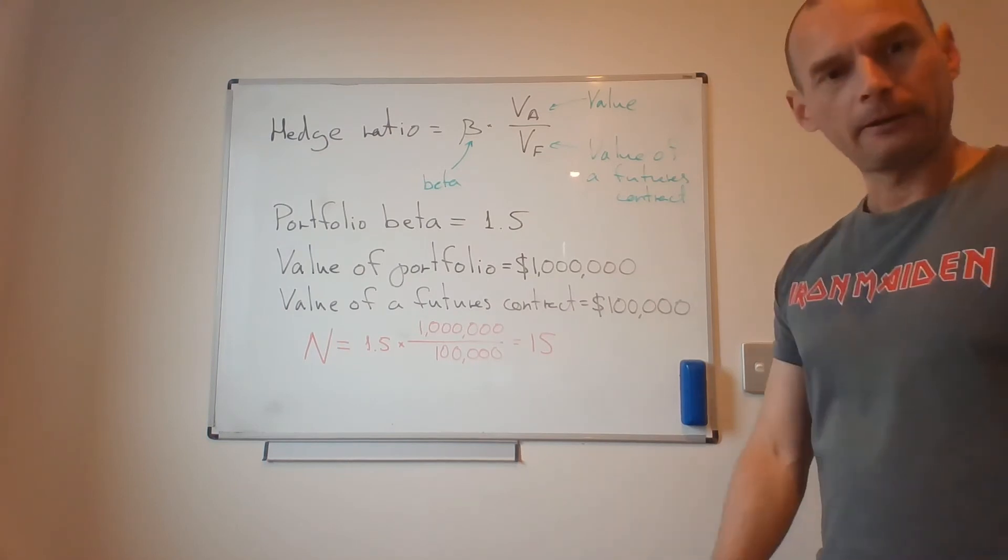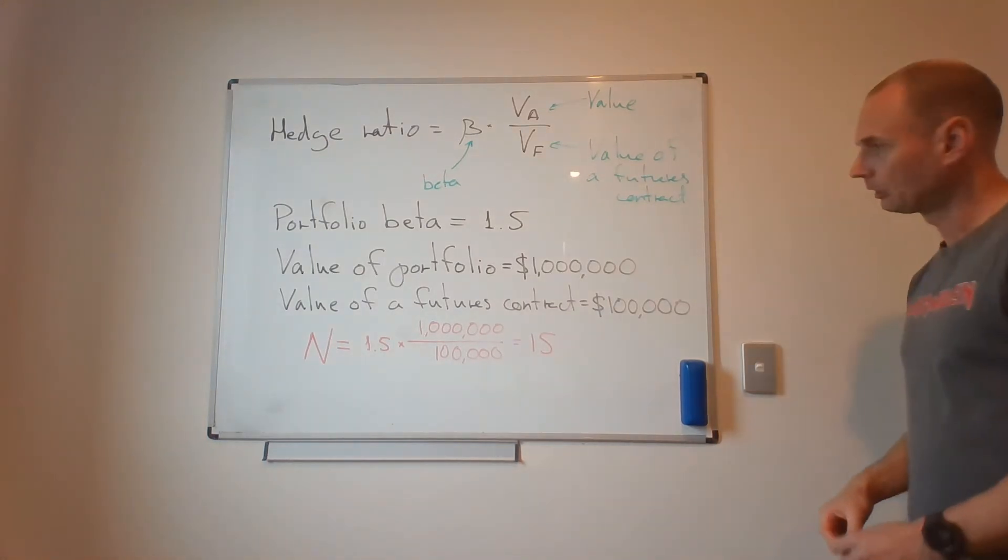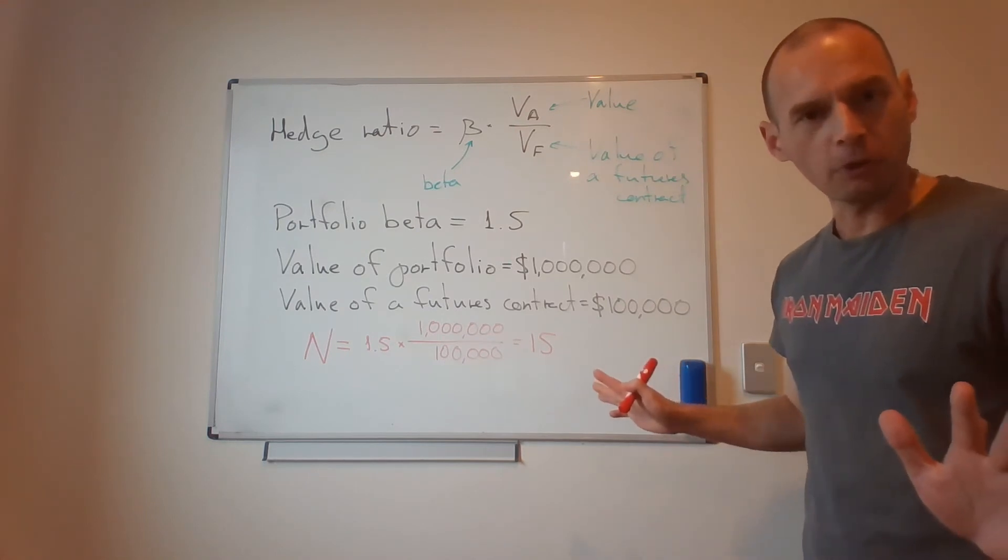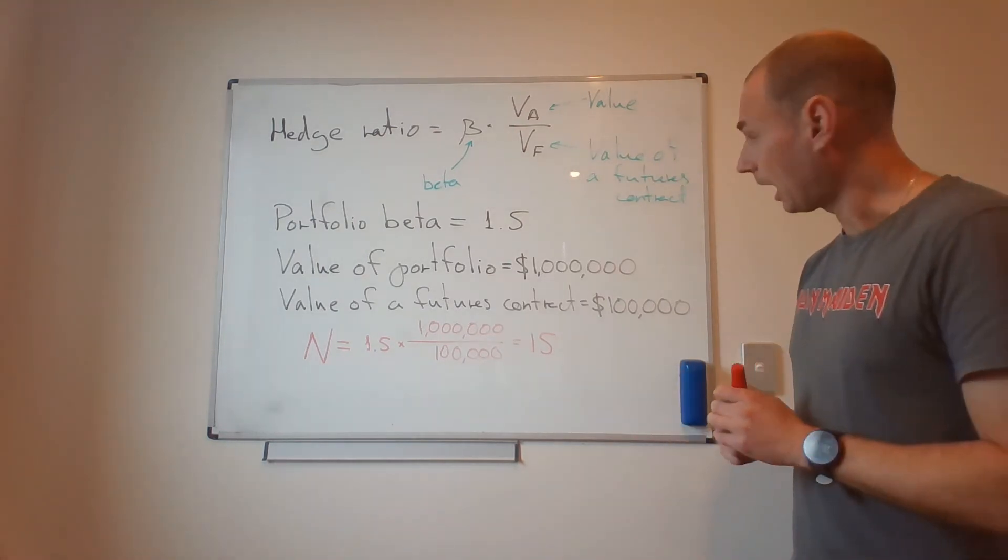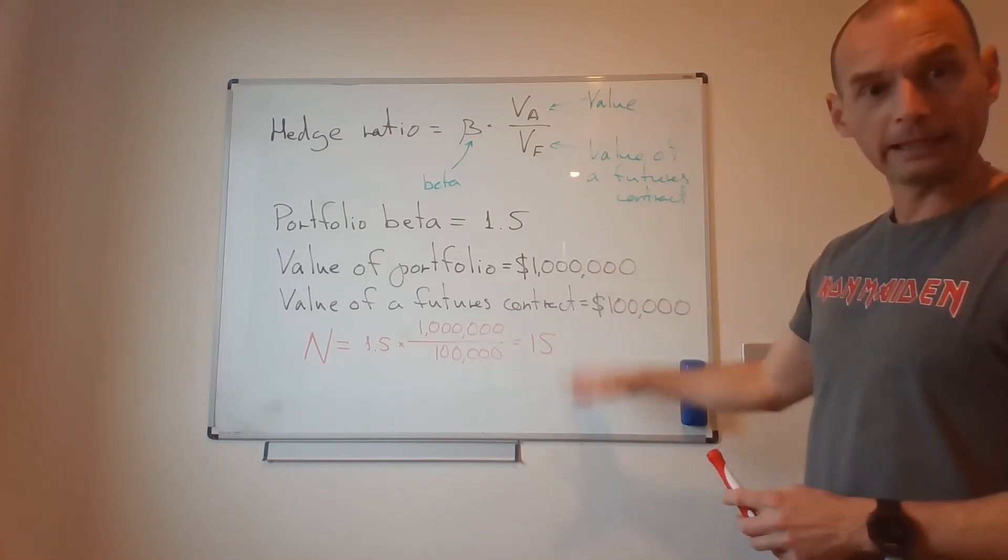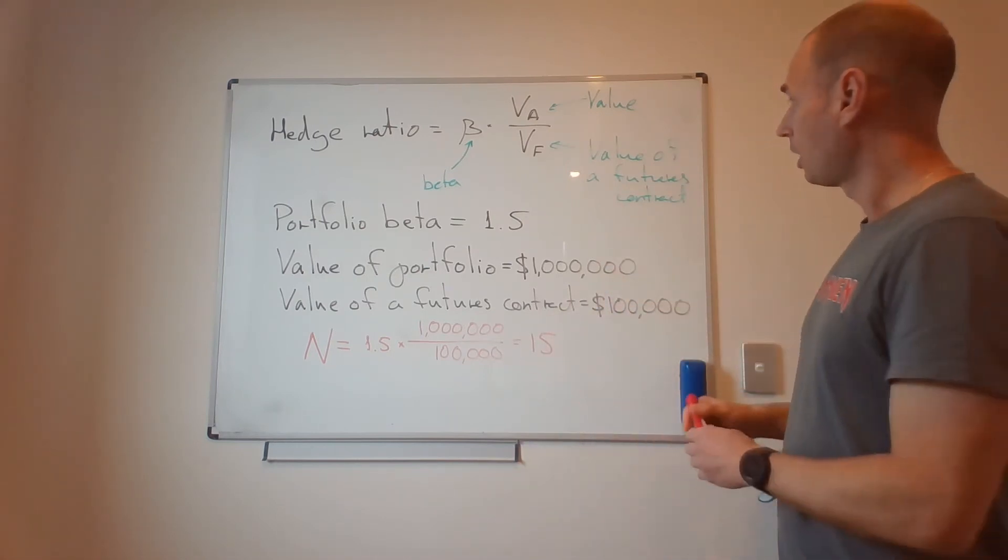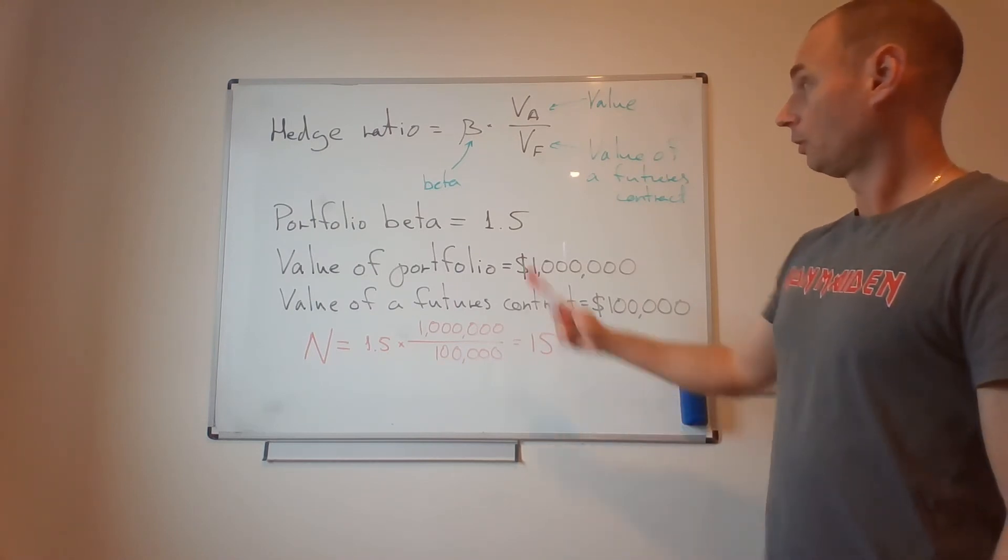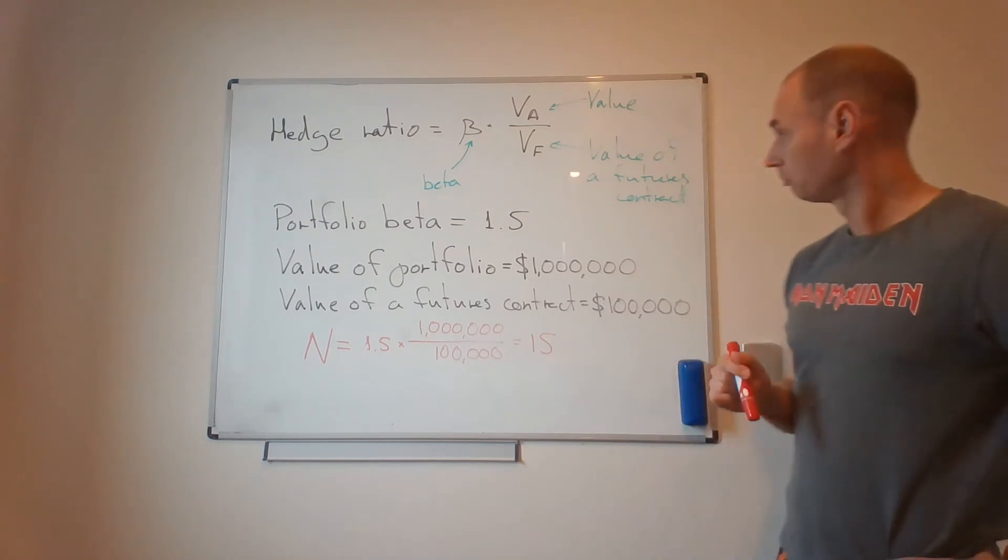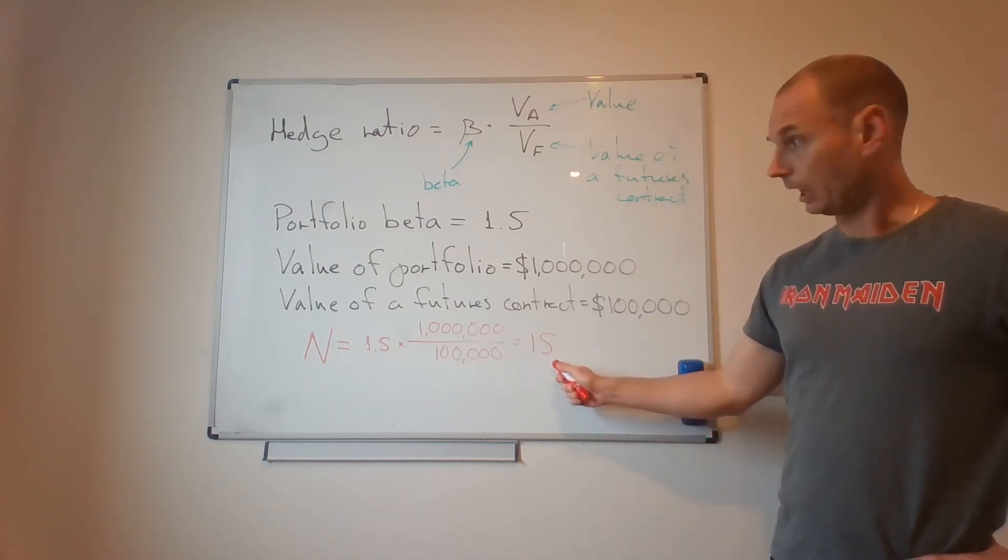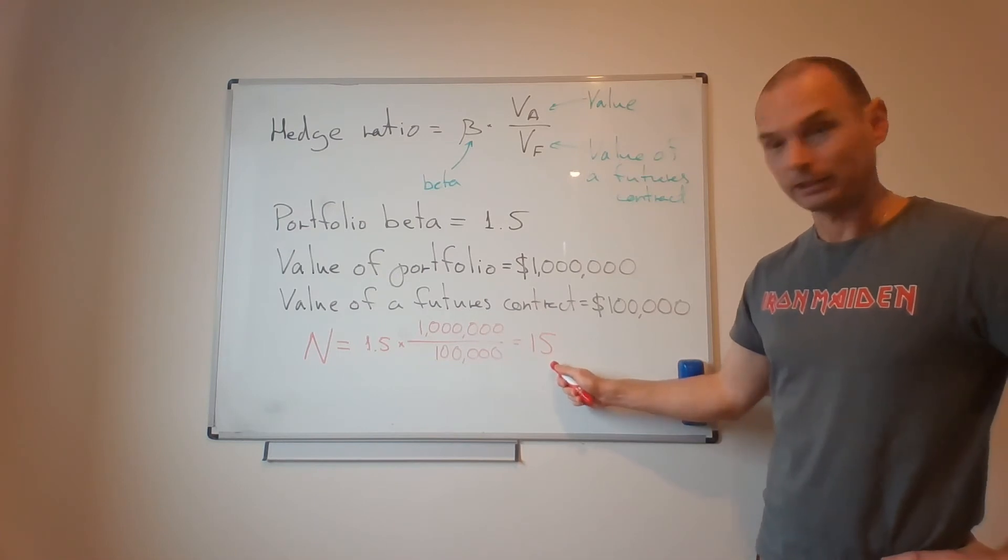Now what if I do not want to completely eliminate the volatility of my portfolio, but I would like to reduce it? So let's say that instead of having a zero beta, instead of completely canceling it out, I want to have a beta of 0.75. In that case I sell seven and a half futures contracts.